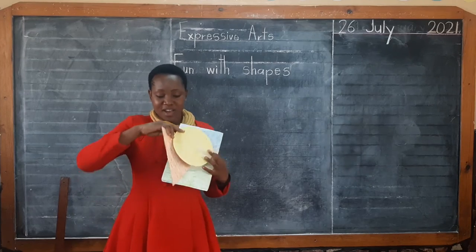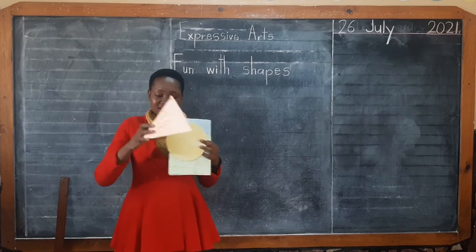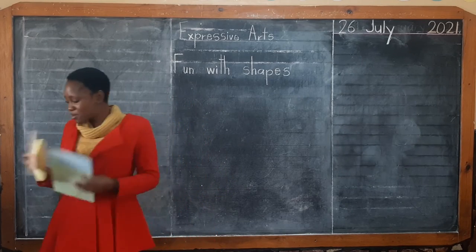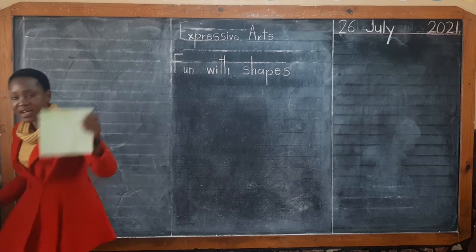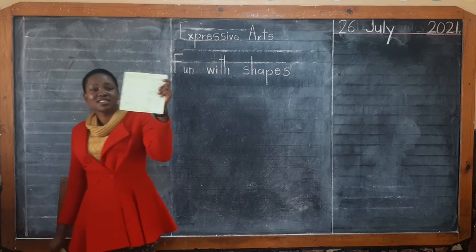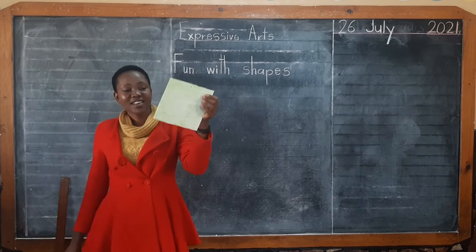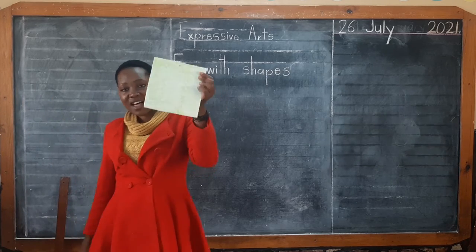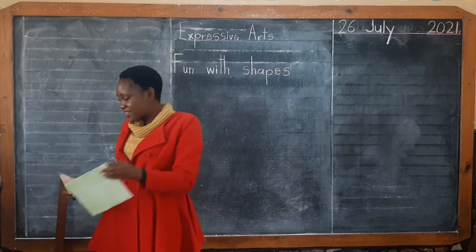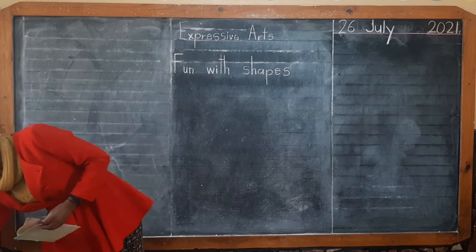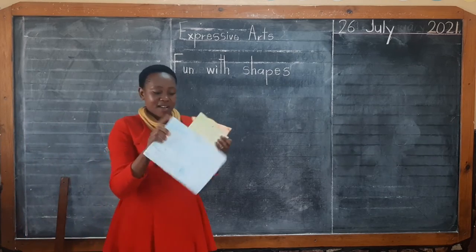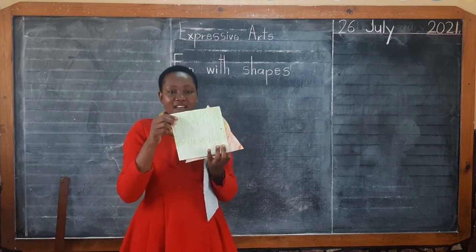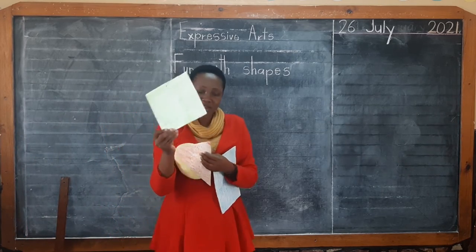Seco triangle, seco triangle, square I see, square I see, a rectangle, a rectangle, square I see.